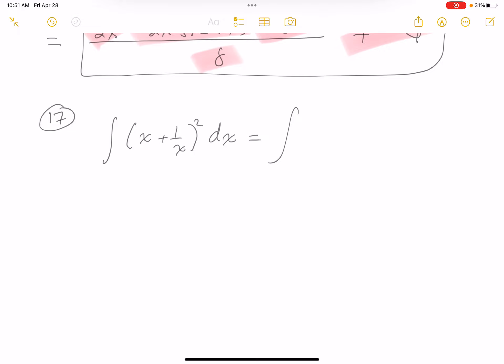So what do you do? I would expand it. You get x squared, you get plus 1 over x squared, then that middle term is going to be plus 2.